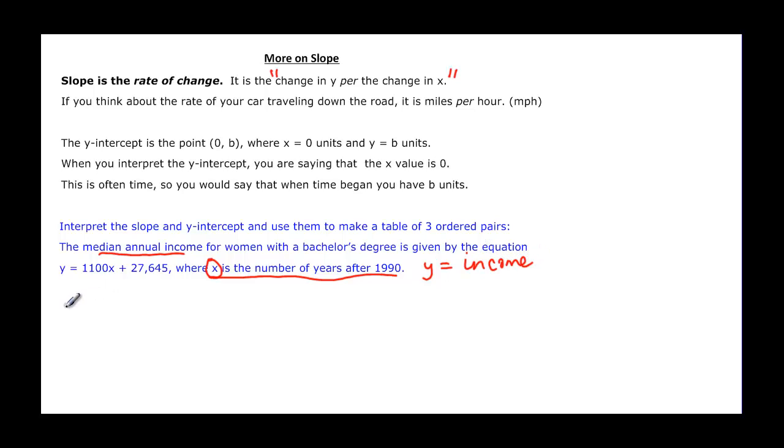So now let's go and interpret our slope. Remember slope is the change in y over the change in x. So that means it's going to be the change in income over the change in years. Our number happens to be 1100. Our number happens to be 1100 means that it's 1100 dollars and it's increasing because it's positive, so it's an 1100 dollar increase in y, and y is income per the x, and x is in years.